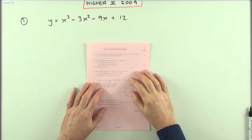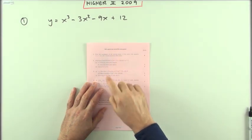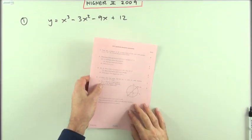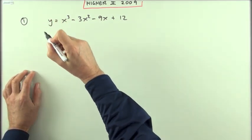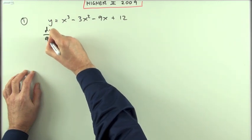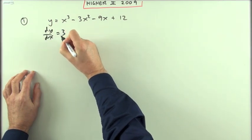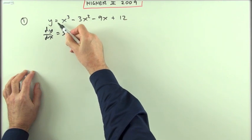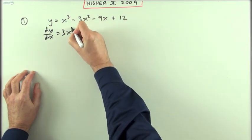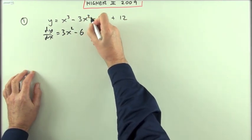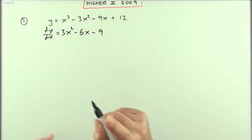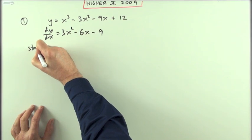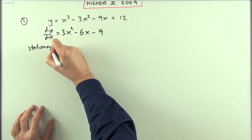Number one from the second paper of the 2009 Higher — an eight mark question on turning points and determining their natures. That should be fairly straightforward. Turning points: differentiate dy/dx, going through the process of differentiating — multiplying by the power, taking one off the power: three x squared, two threes are six, dropping it down to just x, and then just the coefficient.